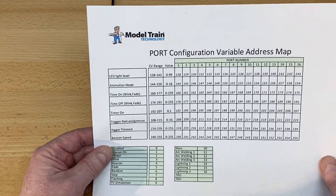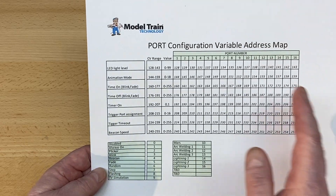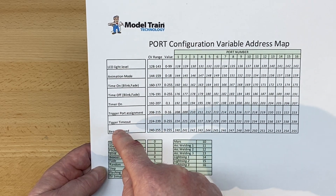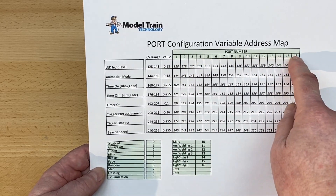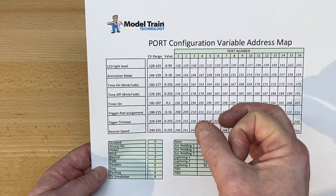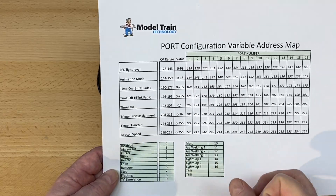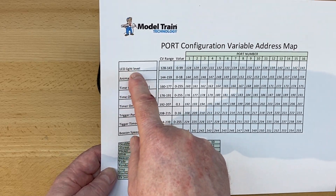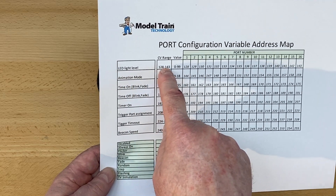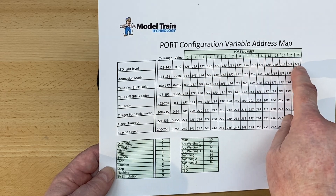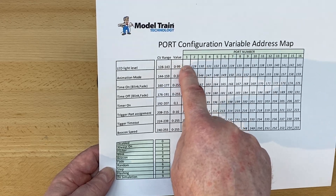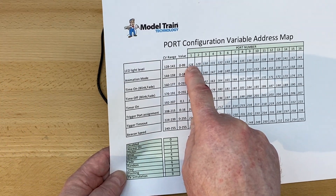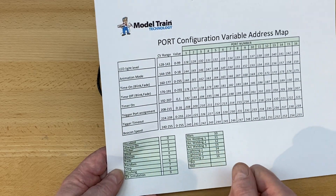The second chart is called the port configuration variable address mode. It lets you set more precise characteristics for each individual port. There are 16 ports, and the numbers in the chart are simply the memory location in the device that you change. For example, the light level — brightness — for LED port 1 is in CV range 128 to 143. You can change brightness using the manual menu or by going directly to CV 128 and changing the value.